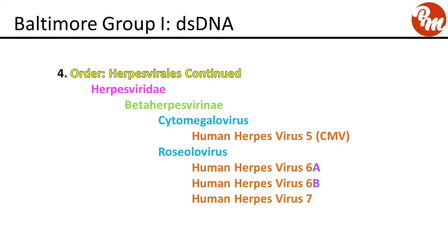Continuing in family Herpesviridae, now subfamily beta herpesvirinae: genus cytomegalovirus includes human herpes virus 5, also called cytomegalovirus or CMV. The next genus is roseolovirus, which includes human herpes virus 6A, 6B, and human herpes virus 7 — all of which cause roseola.